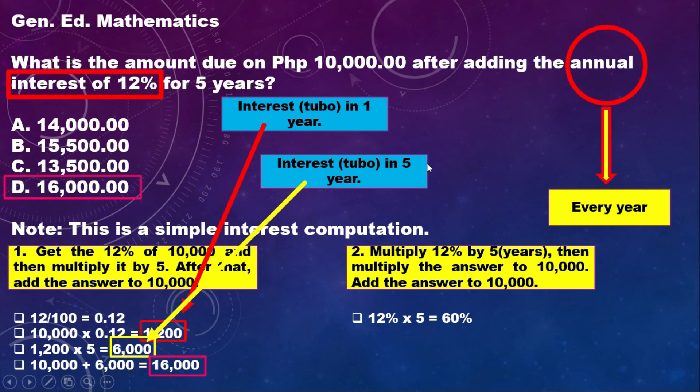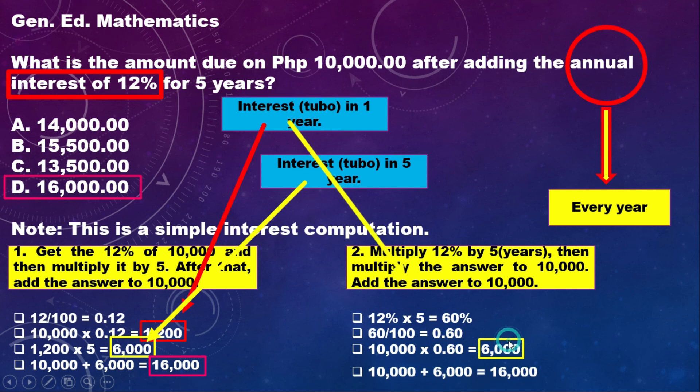To get the 60% of 10,000, multiply them. But first, you have to convert 60% into decimal so you can multiply it by 10,000. That is 60 divided by 100, and that is 0.60 or 0.6. So 0.60 multiplied by 10,000 gives you the 5 years interest on 10,000. So 10,000 times 0.60, that is 6,000. This is the 12% annual interest of 10,000 for 5 years.